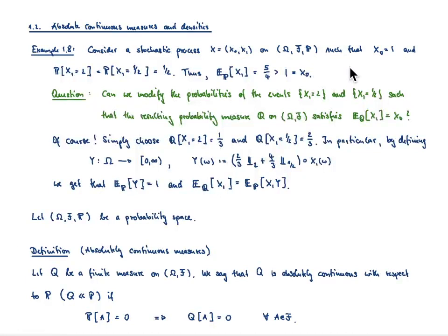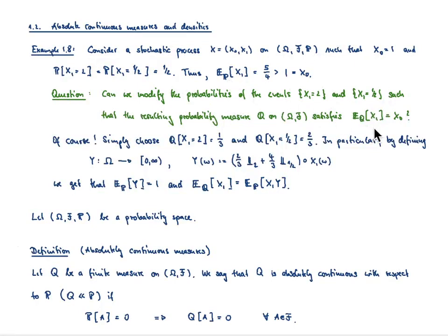For reasons which will be clear later on in the lecture, let me formulate the following task: Is it possible to come up with a new probability measure, let's call it Q, on our measurable space (Ω, F), which has the property that the expectation of X_1 under Q is equal to 1? That's our task.